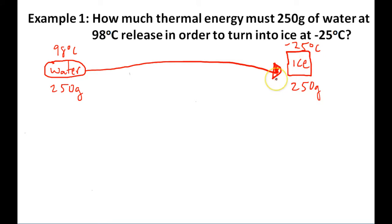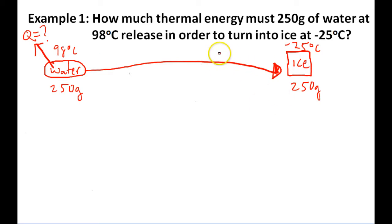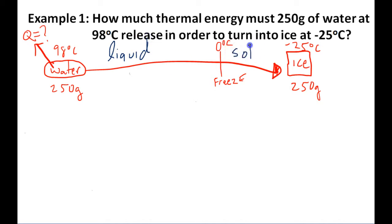What we're being asked to calculate is how much thermal energy this water will need to release in order to convert it into ice at negative 25 degrees. As this water cools down, there will be a point where it's going to freeze — for water, that happens at 0 degrees Celsius. Everything to the left is liquid water; everything to the right is solid ice. We need to find how much thermal energy this water releases to cool to 0, to freeze, and then continue cooling to negative 25 degrees Celsius.